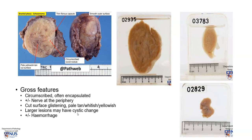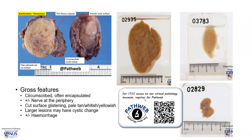Larger lesions may have cystic change as well as hemorrhage. All these are examples of fully interactive virtual pathology specimens, and these are taken from our free online resource, PathWeb. You can scan here for free registration, or the link is also in the video description.